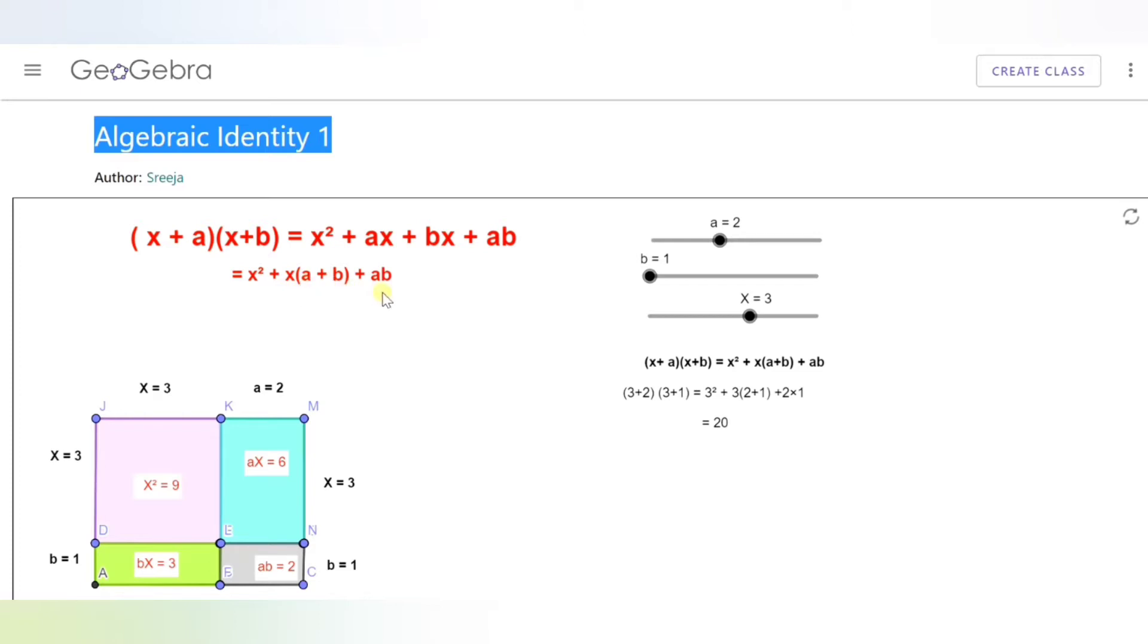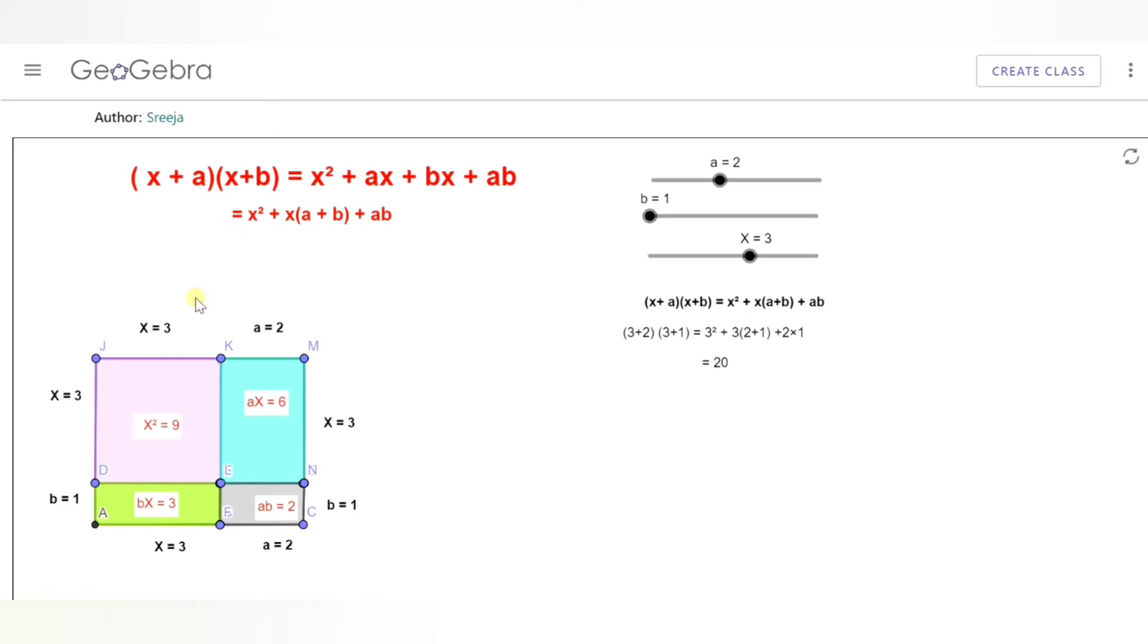Any product of two numbers can be represented by a rectangle. The area of the rectangle gives the product of the two numbers. Let's see how this can be applied here.